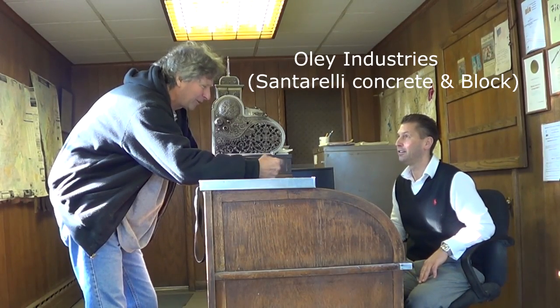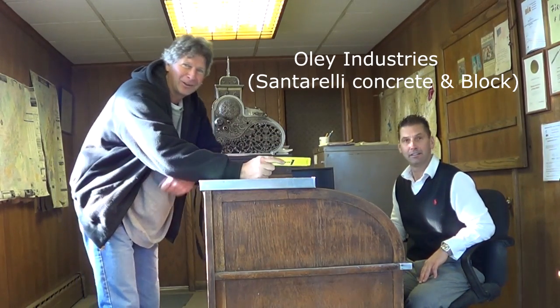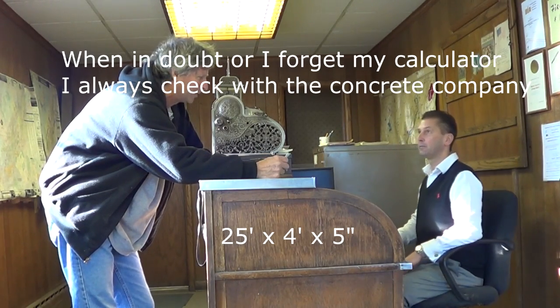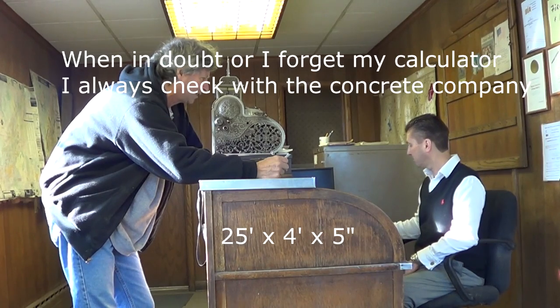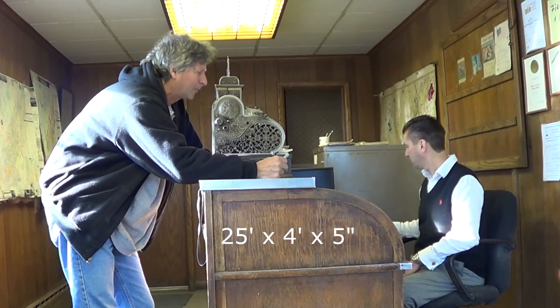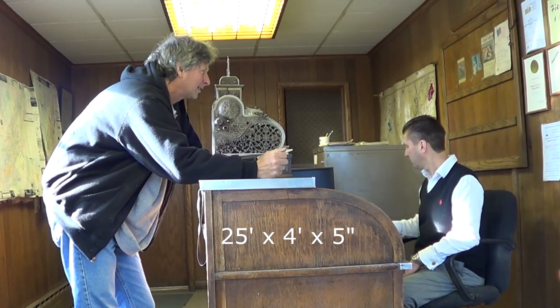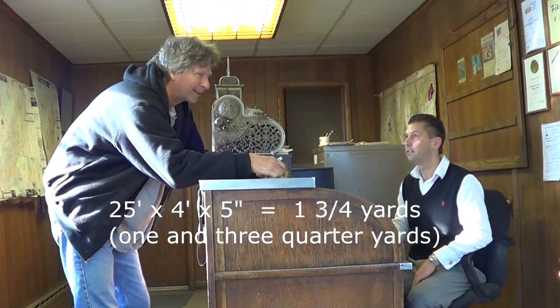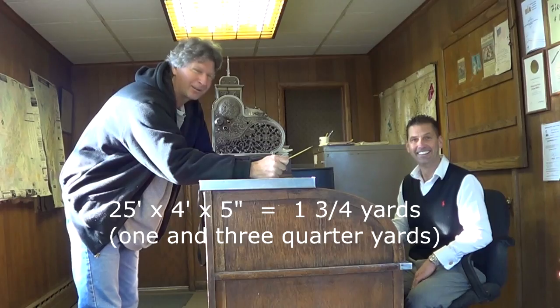Now we're walking into the office of a concrete company. Good morning, Mike. How are you today? This is Mark Ole. He is the owner of Ole Industries, the concrete company. And usually if I don't have my concrete calculator, I call them up and I ask them. I'll say, Mark, I need 25 feet times 4 feet times 5 inches. How much concrete do I need? A yard and three-quarters, Mike. That's the way I do it if I forget my concrete calculator.